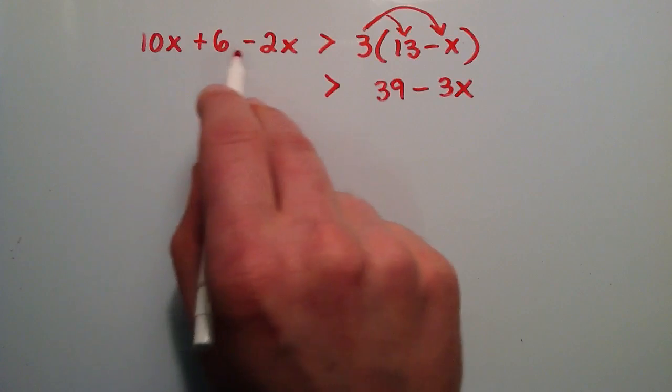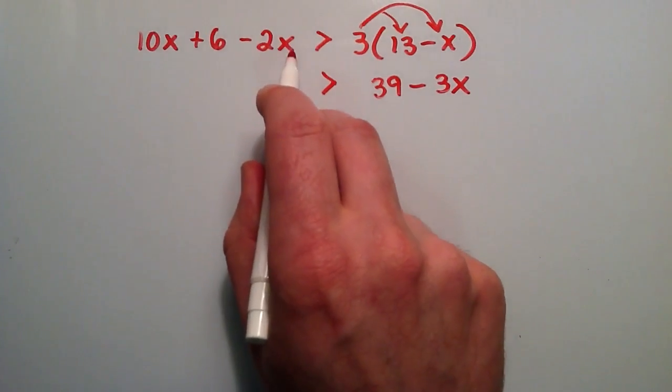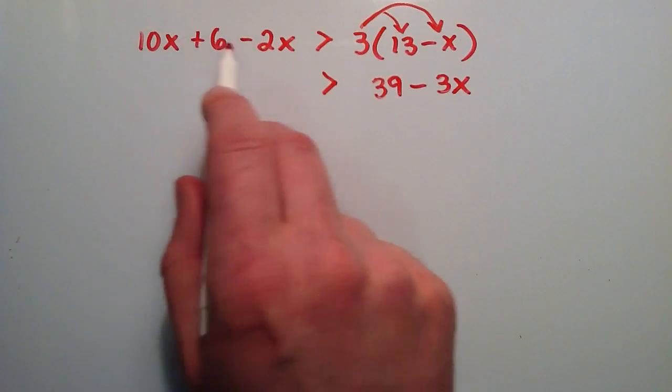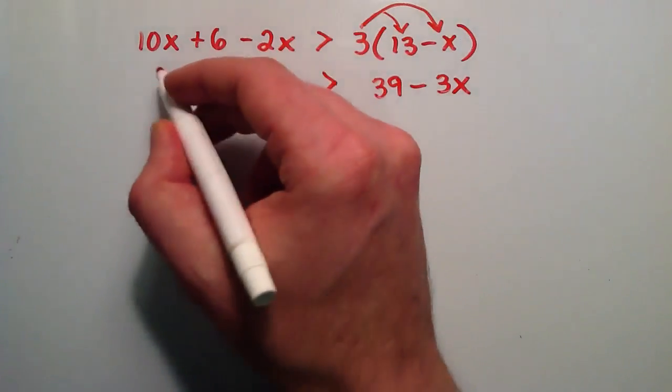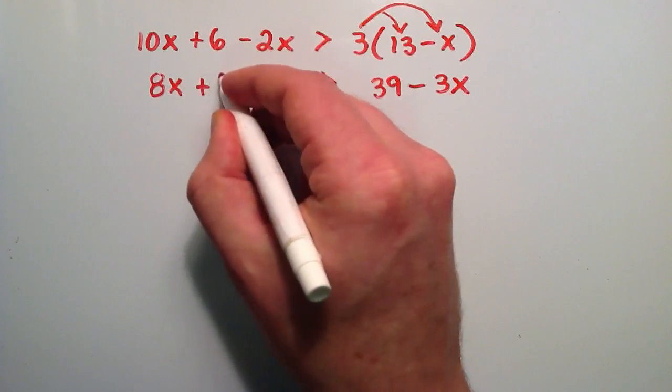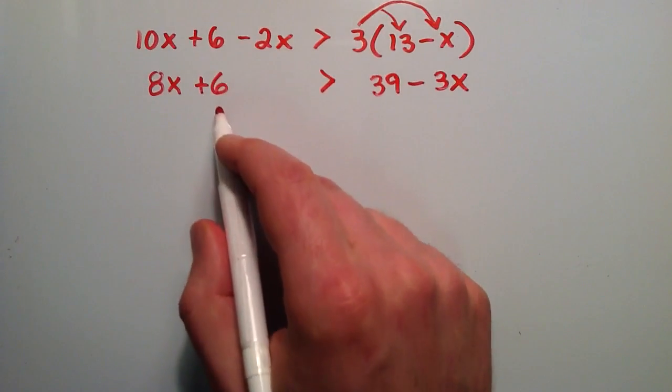And then we have 10x and a negative 2x. So these are like terms right here. So we just simply add or in this case subtract the coefficients. 10 minus 2 is going to give us 8. So that's 8x. And then we have our coefficient which is the 6. Actually it's not a coefficient, it's a constant term.